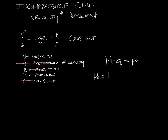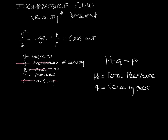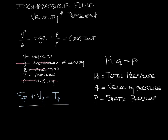Here's the thing: P naught is the total pressure. Q is the dynamic pressure, or as we know it, velocity pressure. And P is the static pressure. So if you look at this the way we're familiar seeing it: static pressure plus velocity pressure equals total pressure.